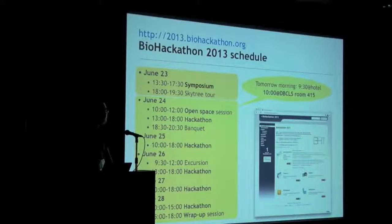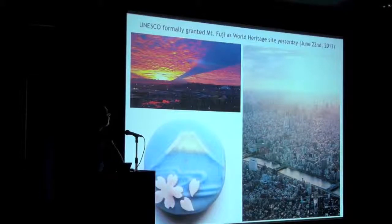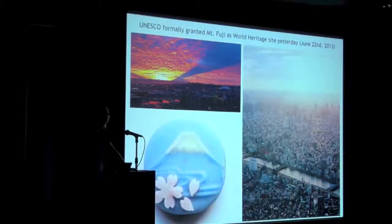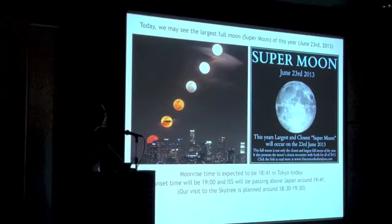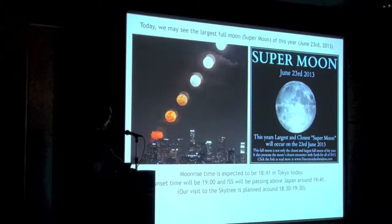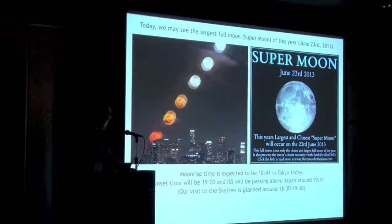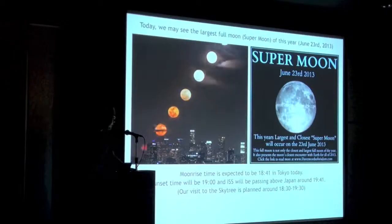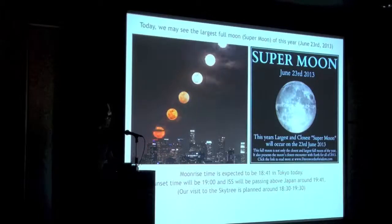Today we will visit the Sky Tower starting at 6pm. If we are lucky, we can see Mount Fuji or the sunset. Today is also a super moon day, so if we are lucky we can enjoy a super large beautiful moon. The moon rise time is expected to be 6:41 in Tokyo and the sunset will be at 7pm. You can also see the international space station passing over to the north.